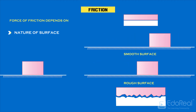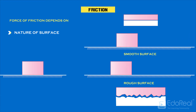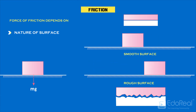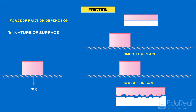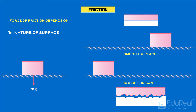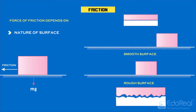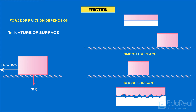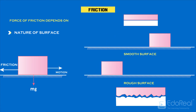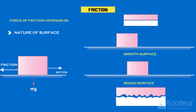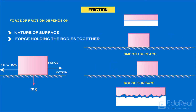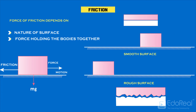When a body is resting on a surface, it is pressed down against the surface with a force equal to its weight, that is, to the pull of gravity. By increasing the weight of the body, the resistance offered to the motion of bodies in contact increases. So, friction depends on the force holding the bodies together.